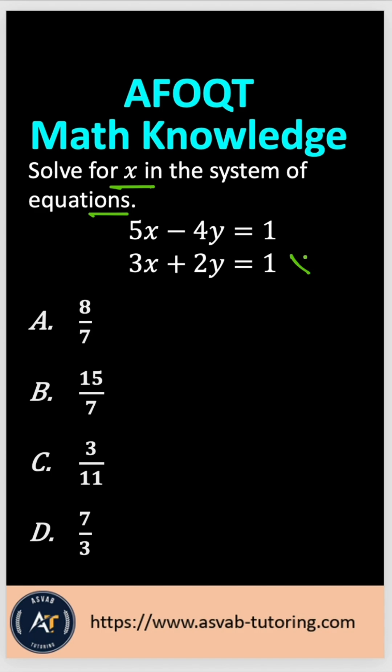you have to first multiply equation 2 by 2. So that gives you 3 times 2 is 6x plus 2 times 2 is 4y equal to 2.